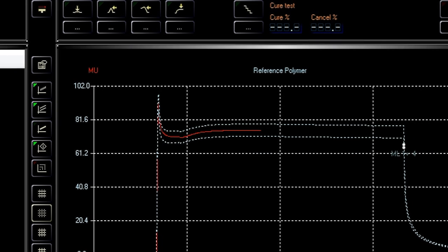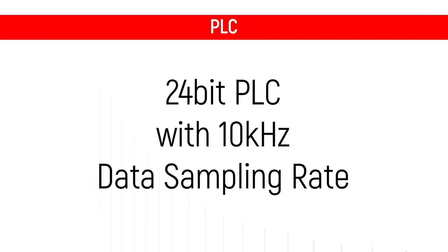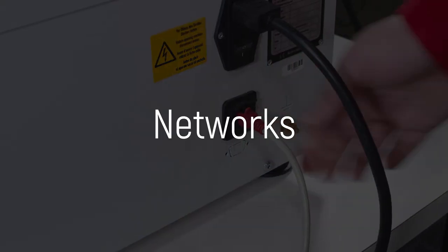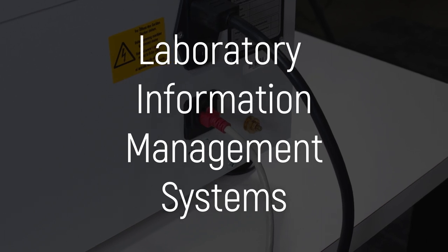To process and analyze the data streams from testing, the MV3000 has a 24-bit PLC with 10 kHz high-speed data sampling rate. It also features Ethernet connectivity for the fastest data output to networks, manufacturing execution systems, and laboratory information management systems.